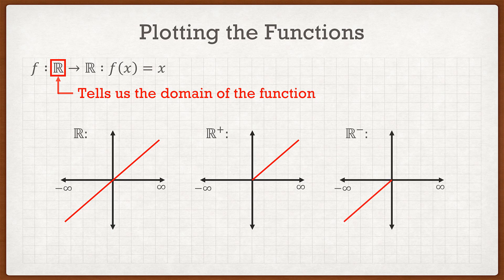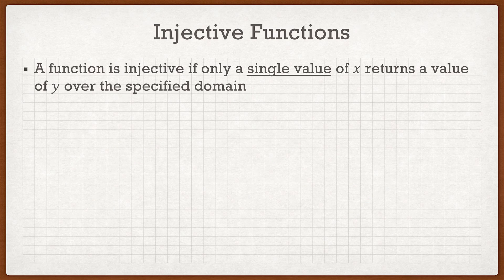We can also go the opposite way with R negative, plotting from negative infinity to zero, including zero if it's well defined. So the first thing we do in the procedure is determine: is this function injective? A function is injective if only a single value of x returns a given value of y over the specified domain. That specified domain is what we just talked about, which is why it's really important to know.